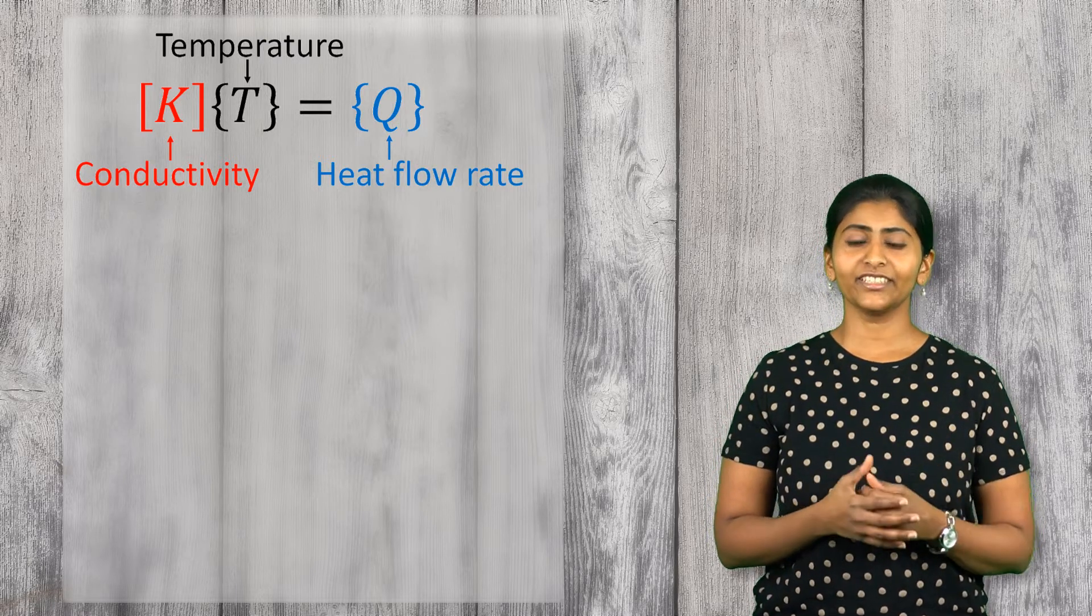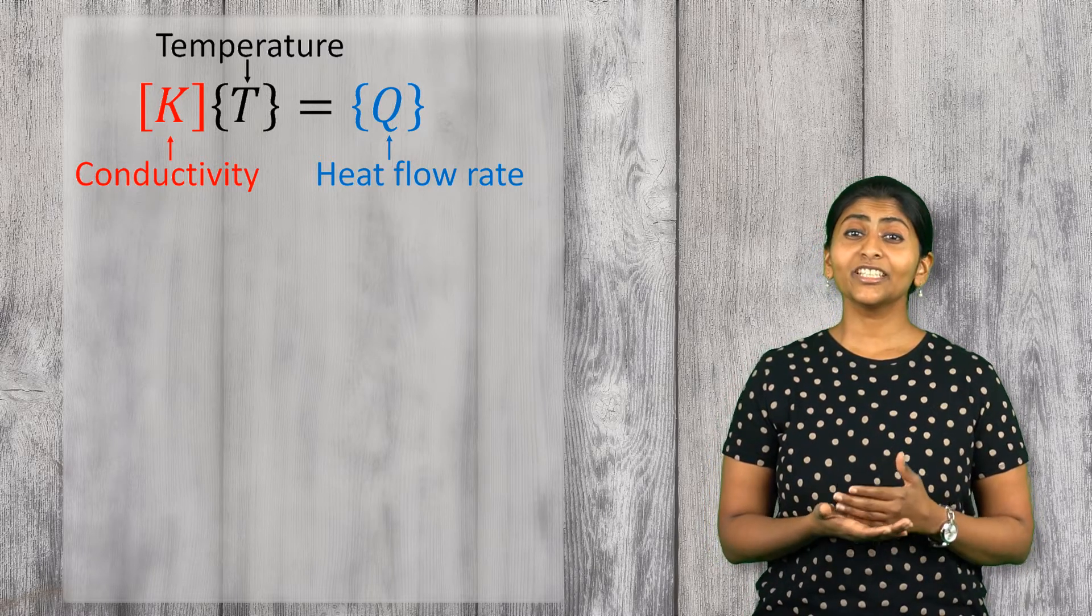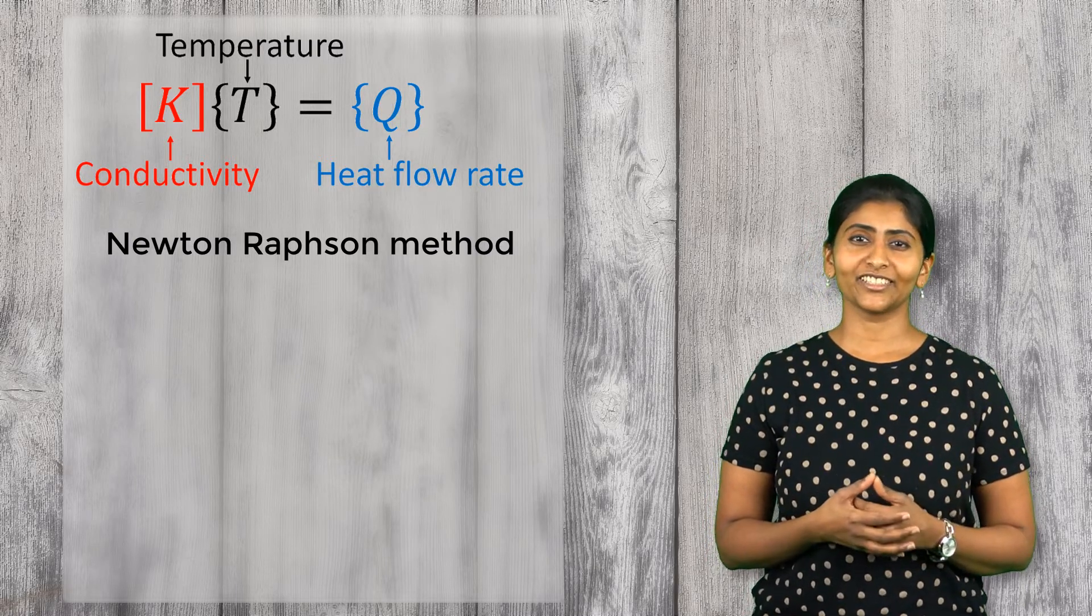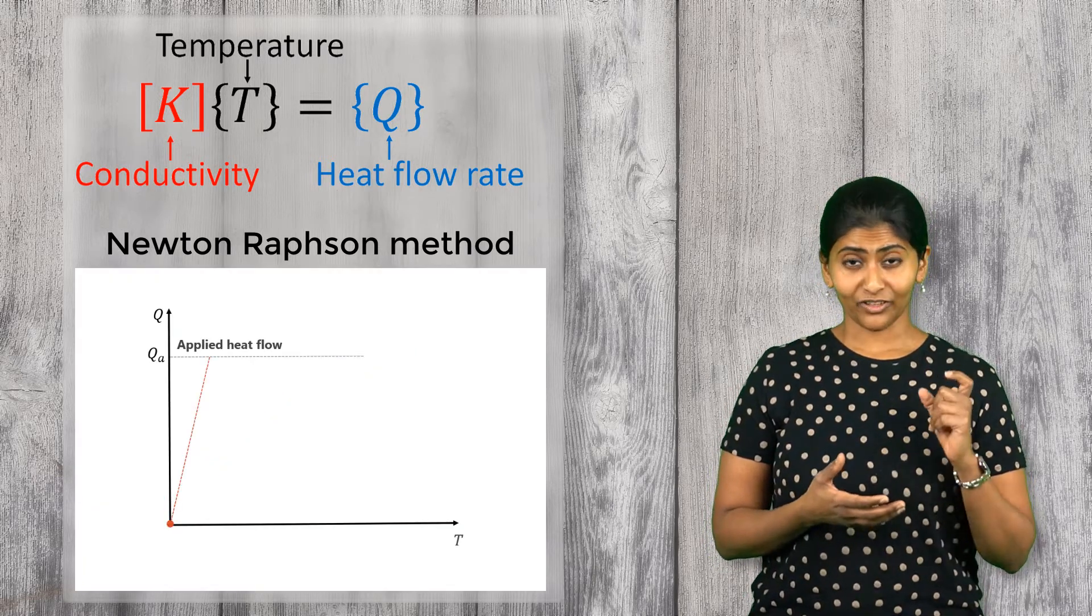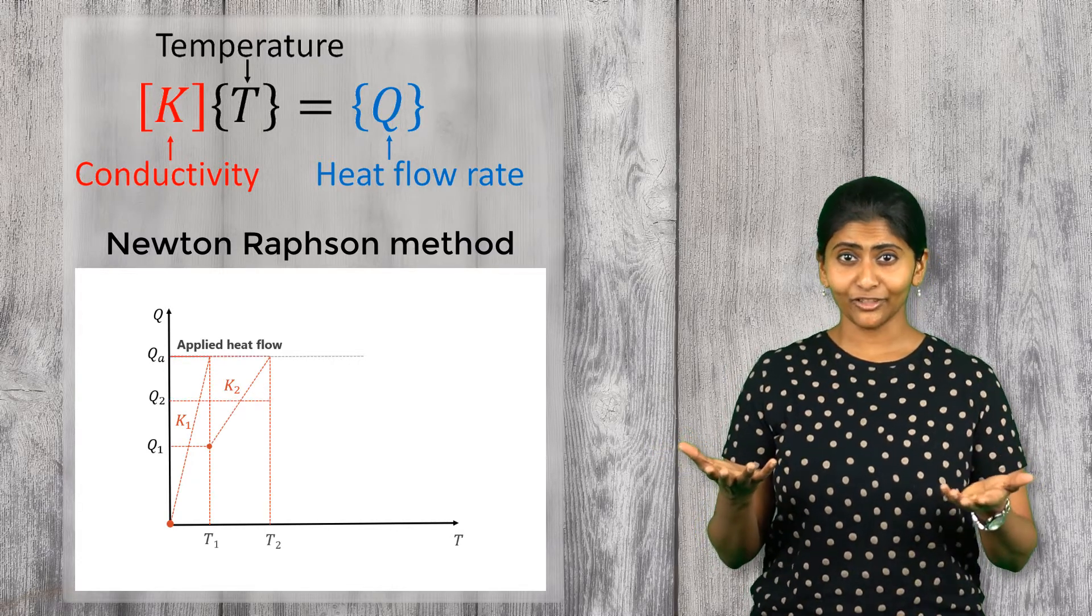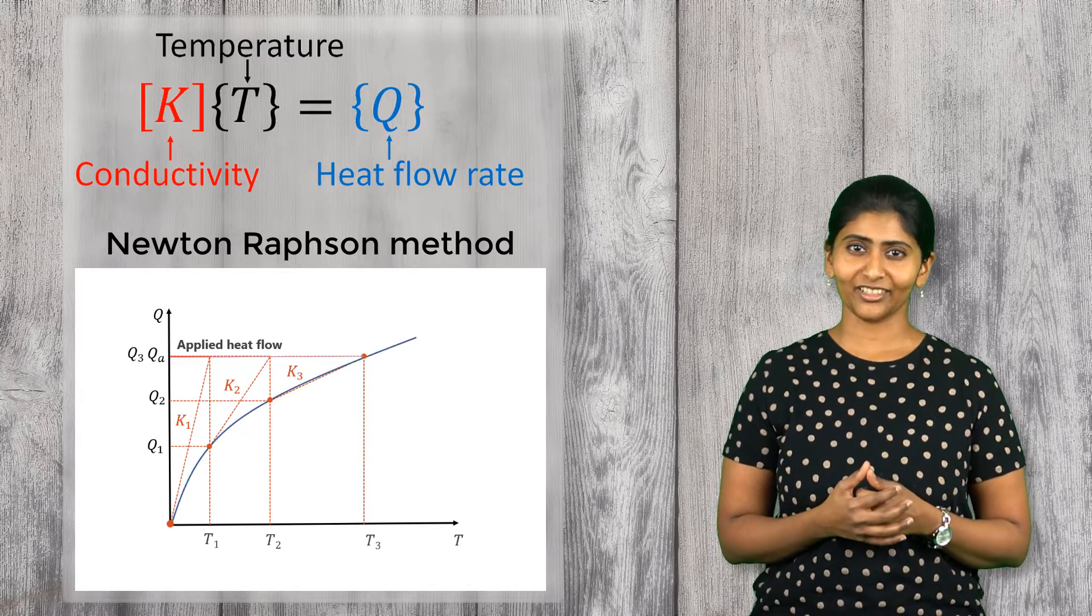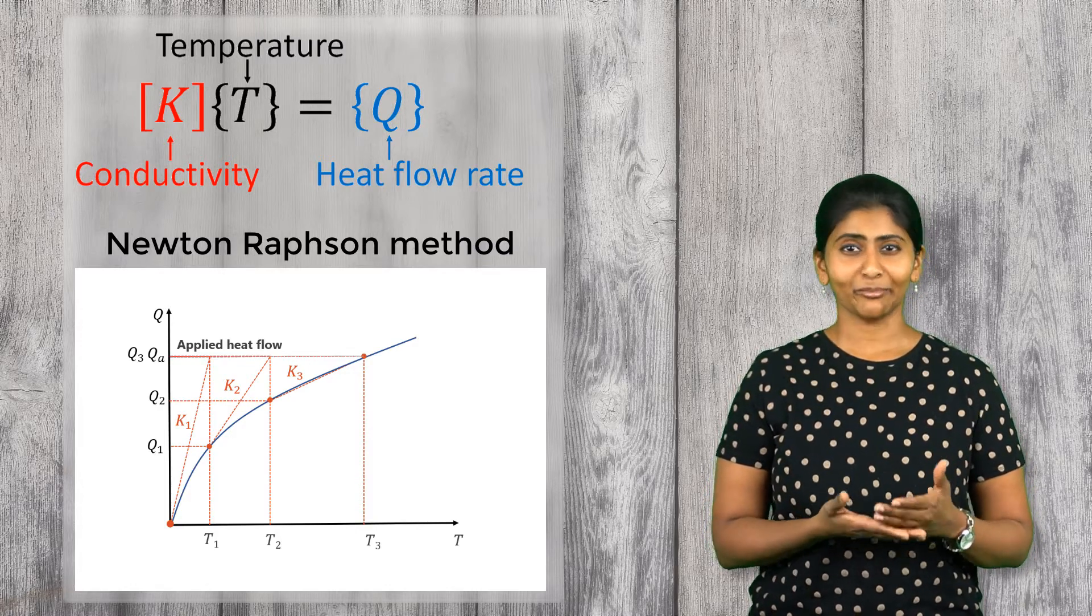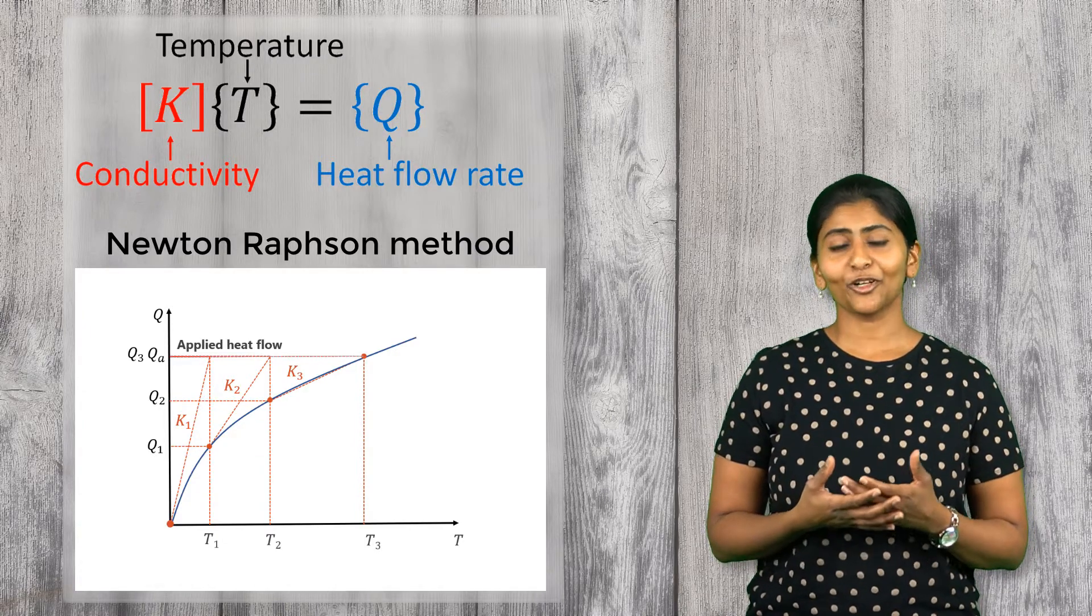To solve such non-linear systems, the Newton-Raphson method is commonly used in finite element analysis to find the numerical solution. It starts with an assumed value of conductivity and by balancing the internal and external heat flow in multiple iterations, the numerical solution is obtained. For a more detailed discussion of the Newton-Raphson method, you can refer to our previous course titled Method of Solving Problems.